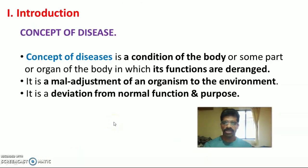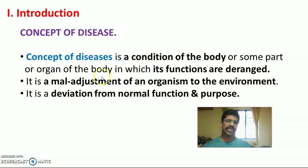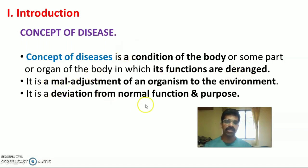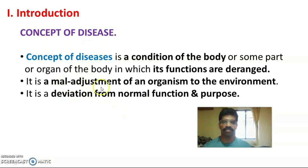First is the introduction. Before we discuss the Epidemiological Triad, we need to talk about the concept of disease. The concept of disease is a condition of the total body, or some part of the body, or different organs, in which functions are deranged — that is, malfunctioned or disturbed. In another meaning, it is a maladjustment of an organism — that is, a human being — towards its environment.